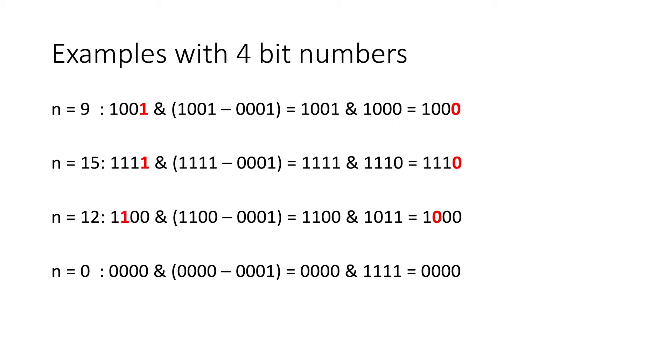So suppose we've got 4-bit numbers, and let's look at these examples. If n equals 9, we've got the 4-bit number 1001, and when we AND that with 1001 minus 1, we get 1001 AND 1000, which produces 1000, which is actually the original number with the lowest 1-bit set to 0.